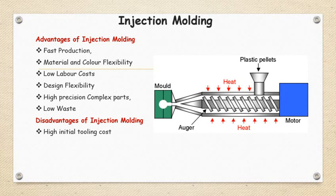The second advantage is material and color flexibility — you can process any kind of plastic material through injection molding and give it any color by adding additives like colorants to the raw plastic. Third is low labor cost. Fourth is design flexibility — you can make any complex geometry components because you have freedom to design the mold cavities accordingly. Fifth is high precision complex parts — you can prepare complex geometries with high precision and tight tolerances. The last advantage is that waste produced is in the form of gates and runners, and is in low quantity.